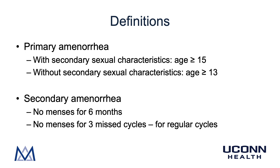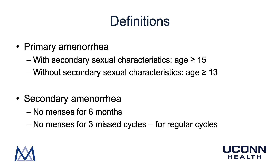Patients with secondary amenorrhea normally have had periods previously and now have ceased their menstruation. Similarly, there are two parts to the definition of secondary amenorrhea. Secondary amenorrhea is defined as no menses for six months. However, for patients with very regular menstrual cycles, no menses for three missed cycles would be used as the criteria. For example, for a patient who has her period in January, February, March, April, and all of a sudden has no periods, you wouldn't wait until October before diagnosing her with secondary amenorrhea — you would wait three months: May, June, July. For patients with irregular periods such as polycystic ovarian syndrome patients, the absence of menses for six months would be the definition for secondary amenorrhea.